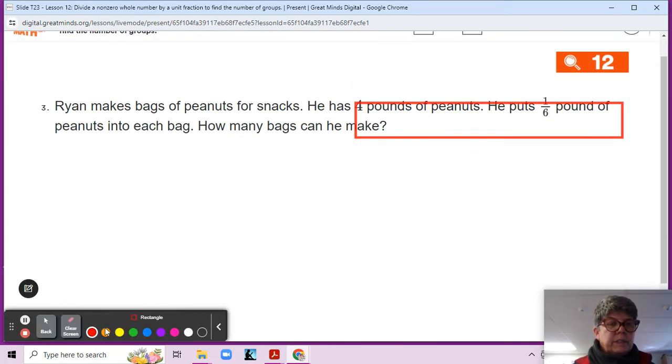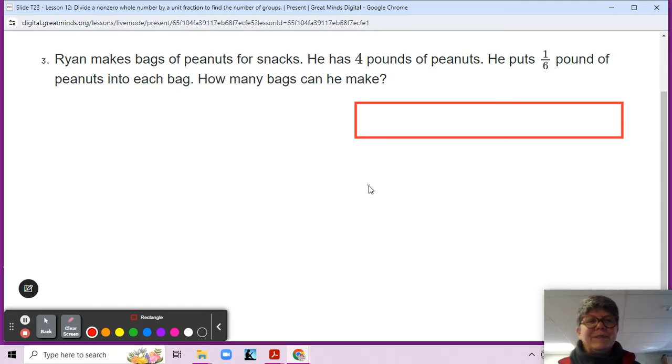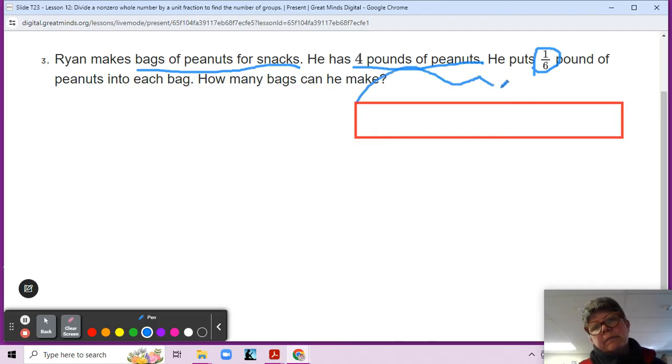Oh, our screen did not get completely cleared. Okay. Well, maybe we can use that one. We'll see. Ryan makes bags of peanuts for snacks. Well, how nice of Ryan. Yes. He makes bags of peanuts for snacks. He has four pounds of peanuts and he puts one sixth of a pound into each bag. How many bags can he make? So first step is make our tape diagram. And this tape diagram is representing four pounds of peanuts, right? And one sixth in each bag.